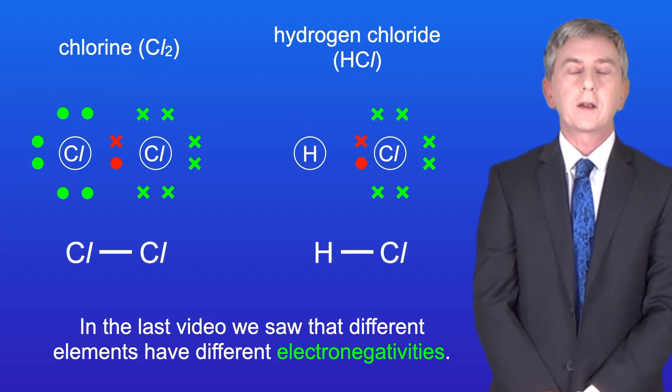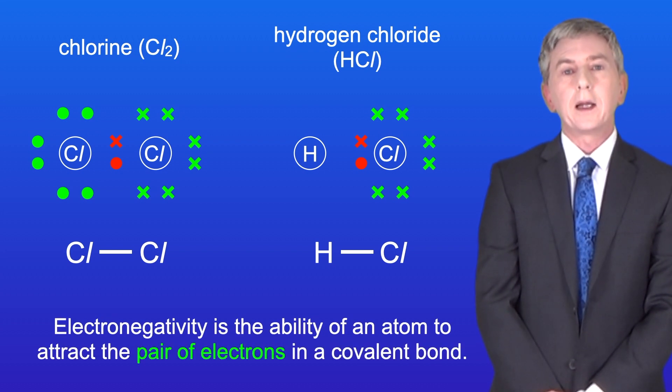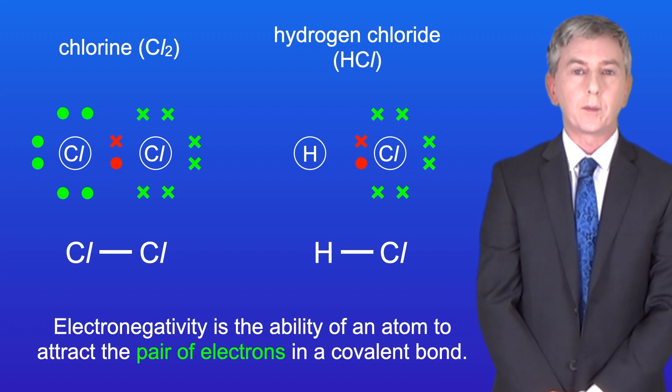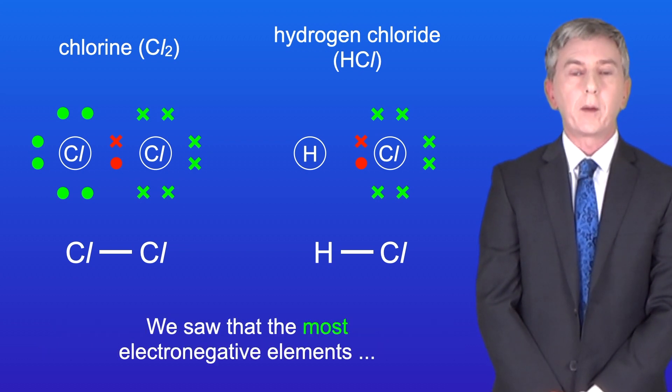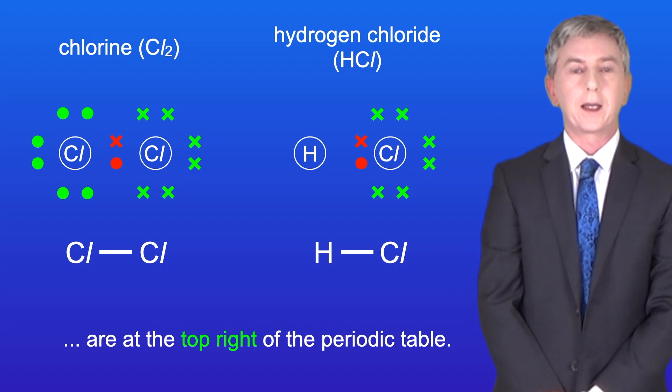In the last video, we saw that different elements have got different electronegativities. Electronegativity is the ability of an atom to attract the pair of electrons in a covalent bond. We saw that the most electronegative elements were at the top right of the periodic table.